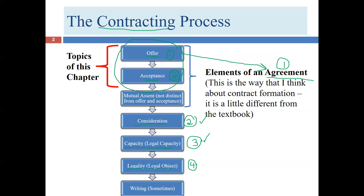If a test question says 'give me the elements of agreement,' that's when you say offer and acceptance. If you can't remember which level they belong to, just list them all — agreement, offer, acceptance, consideration, legal capacity, and legality — and I'll give you full points as long as the four core elements are there. The important thing is there are only four elements to contract, and these are the four.